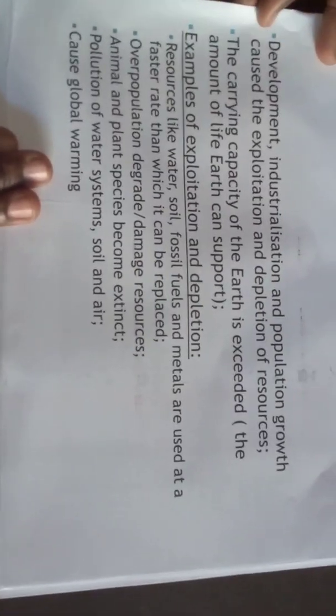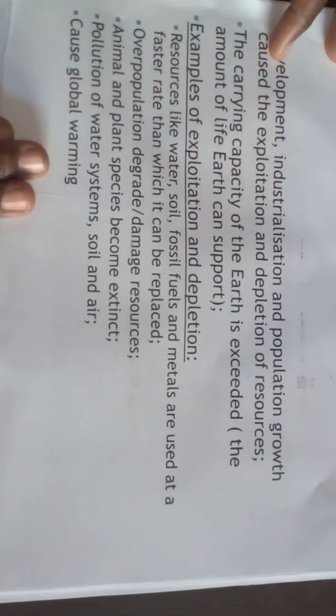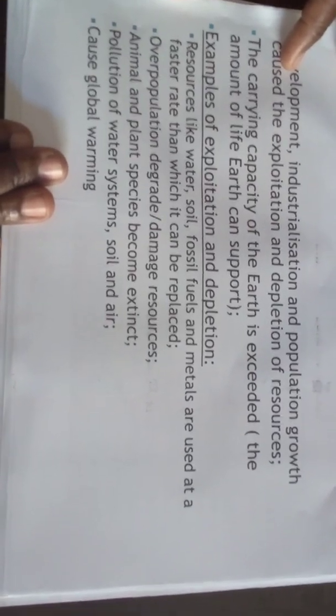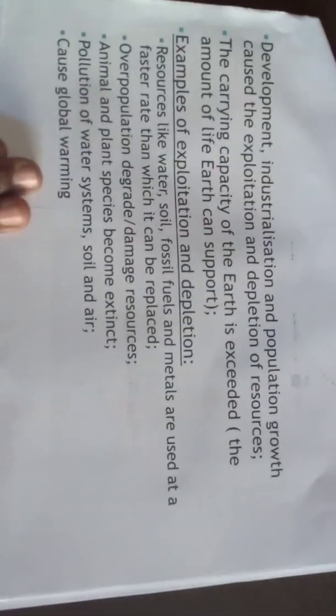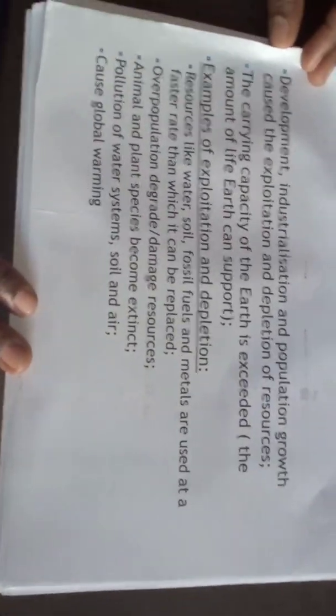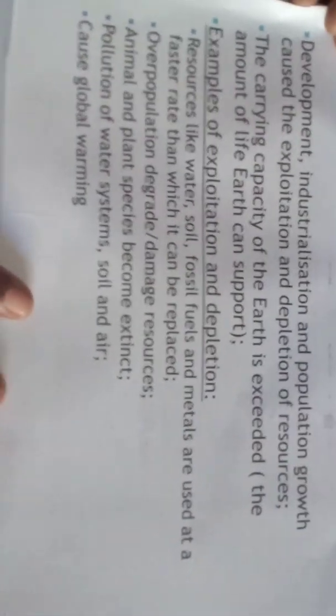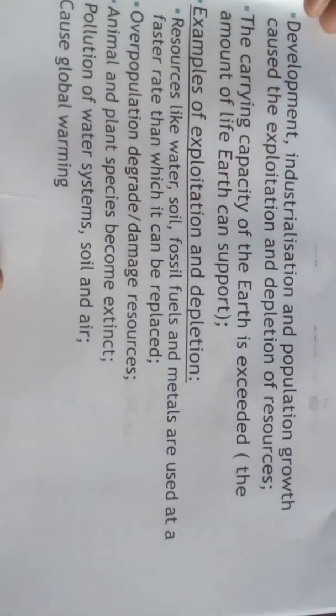The population has degraded and damaged resources because we have cleared forests and built residential and industrial areas, damaging our natural resources. This has also led to animal and plant species becoming extinct. We have polluted our water systems, the soil, and the air. Rapid growth in development and industrialization has also led to global warming.